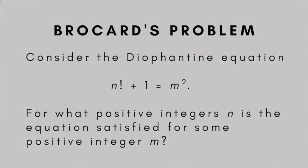Start with the equation n factorial plus 1 equals m squared. Remember that the factorial of a positive integer n is the multiplicative product of all the integers from 1 to n. For example, 5 factorial is just 5 times 4 times 3 times 2 times 1, which equals 120.